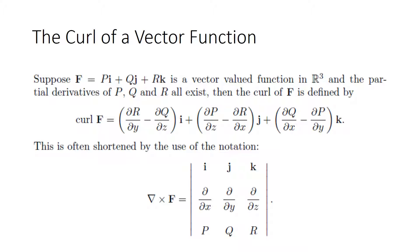The curl of a vector function. Suppose a vector function f is defined as a function p in the i direction, plus a function q in the j direction, plus a function r in the k direction — a vector-valued function in R3 — and the partial derivatives of p, q, and r all exist. Then the curl of f is defined by the quantity shown, often shortened using determinant notation.